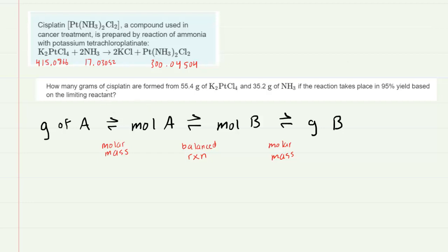In this question we're trying to determine the number of grams of cisplatin, which is the product in this reaction, that are formed by a given number of grams of each of the two reactants. We're also told that the yield is only 95%. We've found the molar masses of both reactants as well as the product and written those molar masses beneath the compounds.